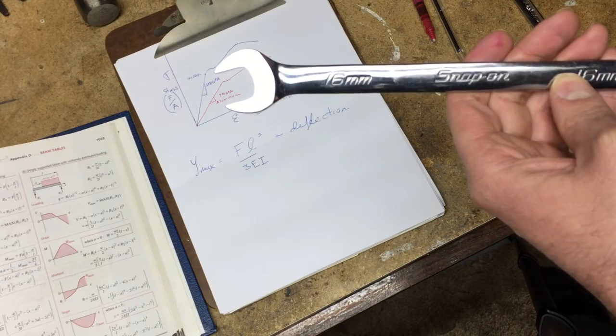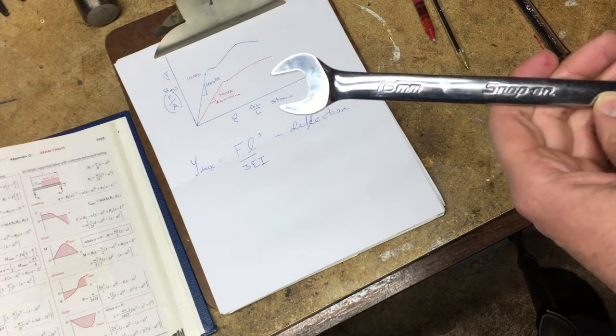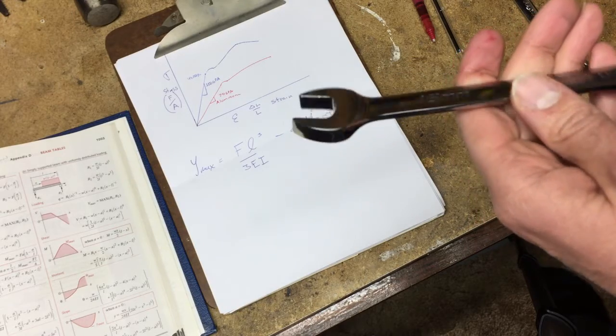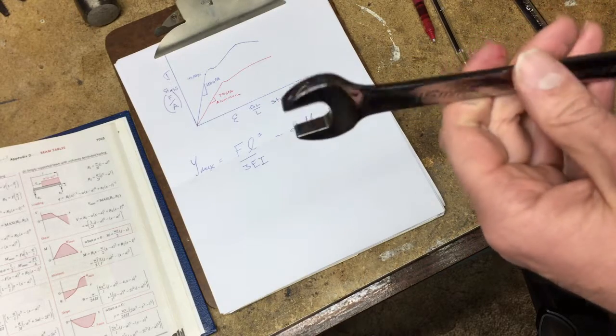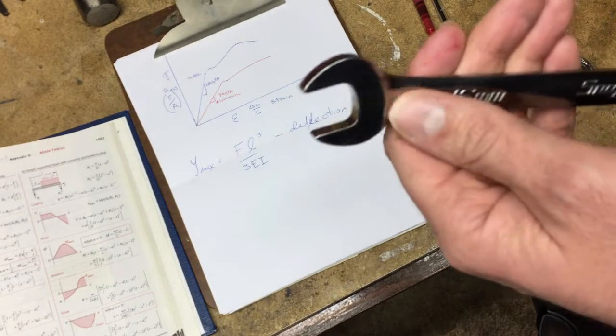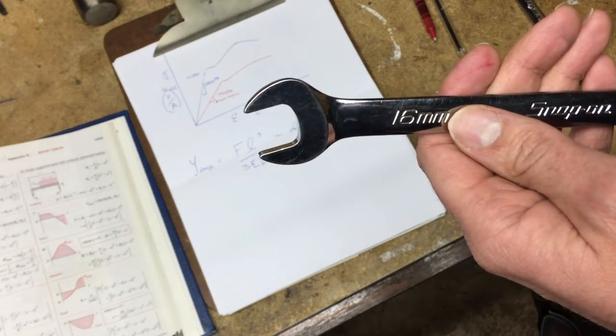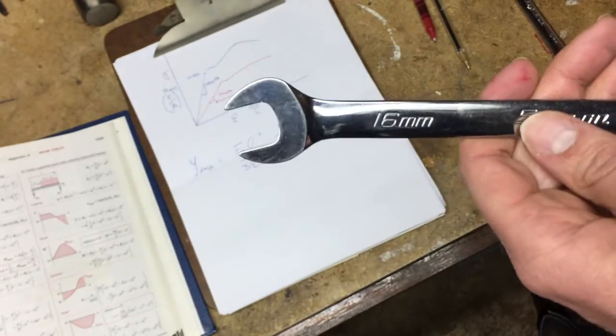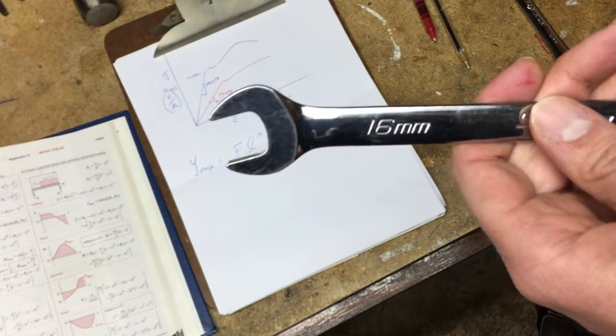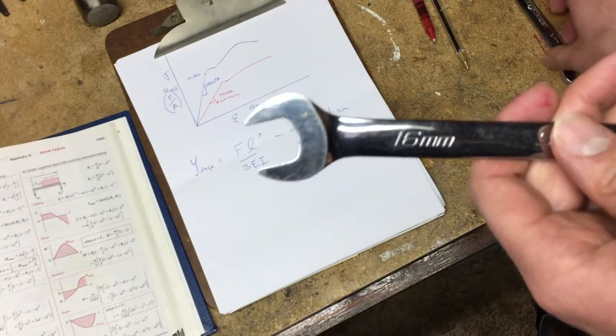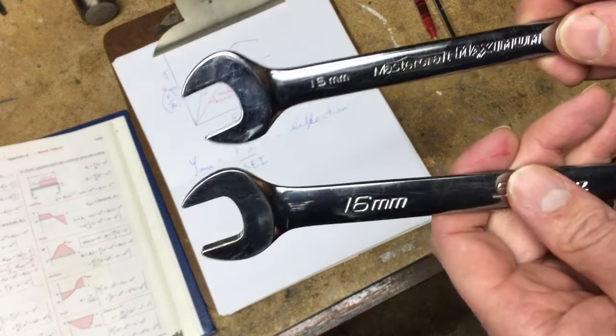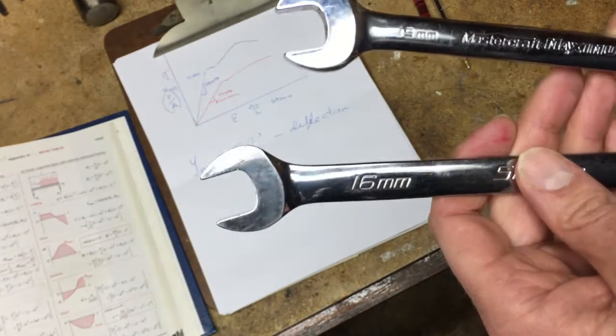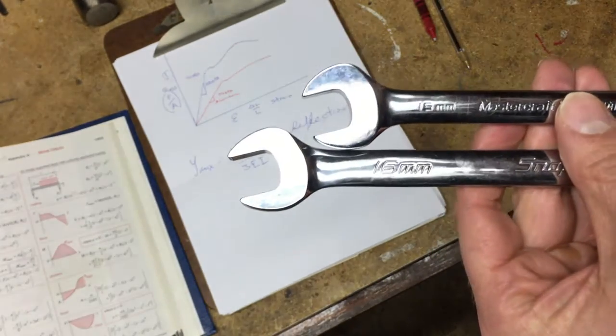Gentlemen and the odd lassie, welcome to the shop. Today I'm going to go over something I've heard a lot about - Snap-on wrenches. Namely, the open end here deflects less than other brands, therefore Snap-on is the best and you should buy it. Is that fact or fiction? So this deflects less than this on the open end? Snap-on fanboys, grab a chair.